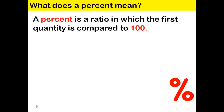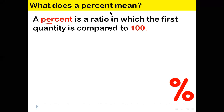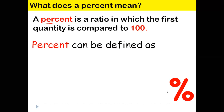Now, what does a percent mean? The word percent is actually a ratio in which the first quantity is compared to 100. The word percent comes from two parts: 'per' and 'cent.' In English, 'per' means 'for each.' 'Cent' refers to cents — in a dollar there are 100 cents. So 'percent' means 'for each 100.' It's always compared to 100. The percent symbol represents this, and percent can be defined as 'of 100' or 'out of 100.'